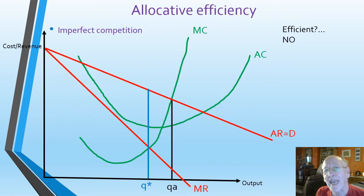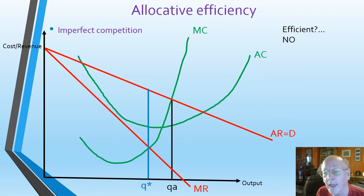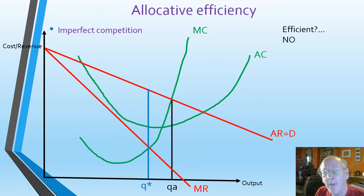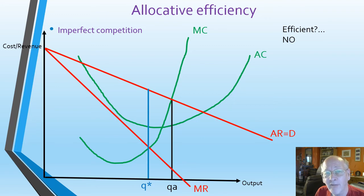If we look at imperfect competition — that's any market that is not perfect: oligopoly, monopolistic competition, or monopoly — they will be producing to maximize their profits where MC equals MR, so they'll be producing at Q star. However, to be allocatively efficient they would need to be producing at QA. They are not producing at QA, therefore they are not allocatively efficient. Are you starting to get the idea that imperfect competition is not efficient? Well, you should be.